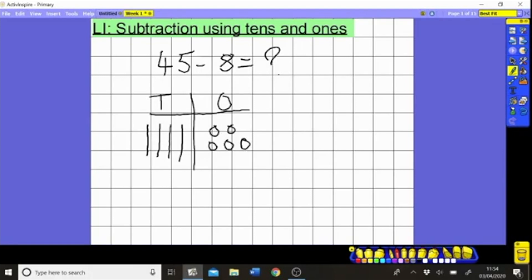Now this time we can't take eight away from this number because there are only five ones there. We can only take ones away from the amount of ones that are there, so we don't have enough ones here to take away eight ones - there are only five.